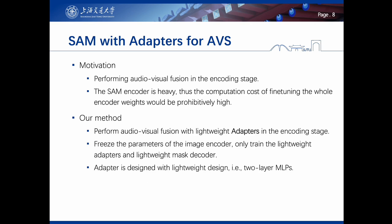To mitigate this, we propose to perform audio-visual fusion in the encoding stage. However, the SAM encoder is heavy with many parameters, making fine-tuning the encoder weights prohibitively costly. To tackle this, we introduce lightweight adapters to perform audio-visual fusion in the encoding stage. We freeze the parameters of the heavy image encoder and only train the lightweight adapters and lightweight mask decoder. The adapter has a lightweight design of two-layer MLPs.